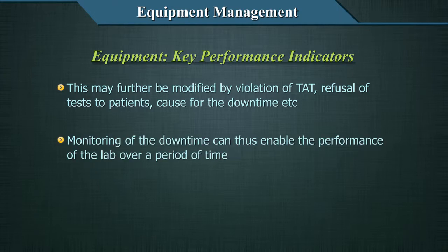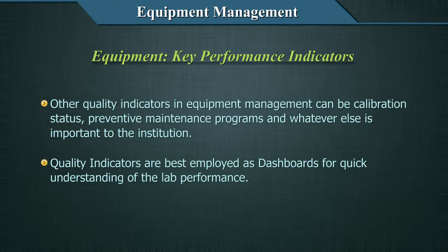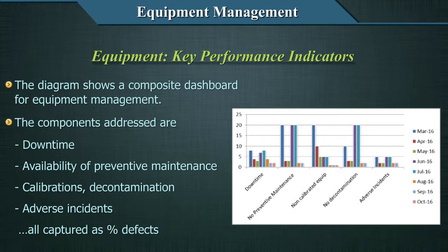Monitoring of downtime enables assessment of the lab's performance over a period of time. Other quality indicators in equipment management can include calibration status, preventive maintenance programs, and whatever else is important to the institution. Quality indicators are best employed as dashboards for quick understanding of the lab's performance.